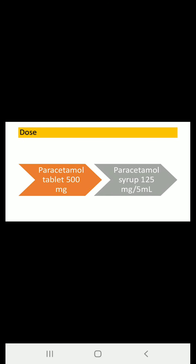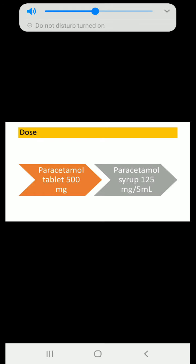In short, paracetamol works by blocking chemical messengers in the brain — messengers that tell us we have a pain sensation. It directly blocks those chemical messengers so they cannot be secreted, and we cannot feel any kind of pain. Paracetamol also reduces fever by affecting chemical messengers in the area of the brain that regulates body temperature.